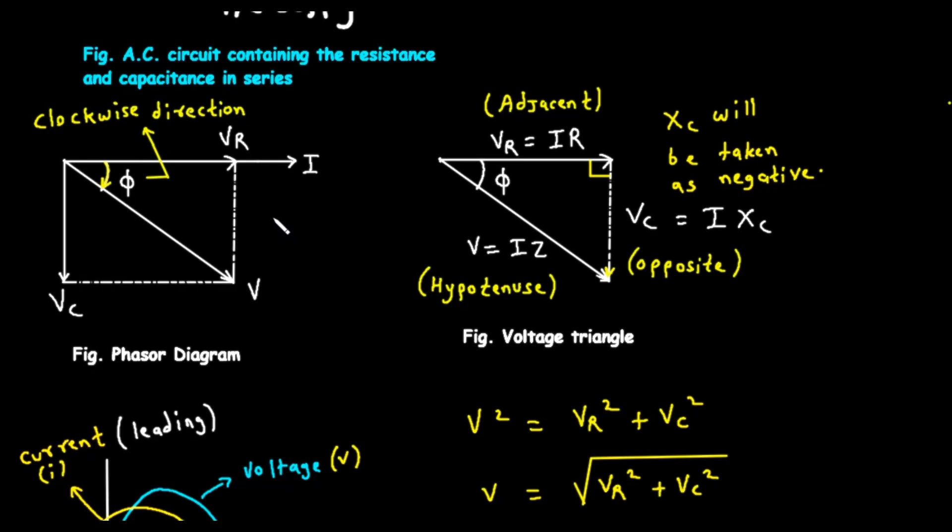Now, let's add the voltage phasors. The voltage across the resistor VR is in phase with the current. So we draw its phasor VR right on top of the current phasor, also pointing to the right. Next is the voltage across the capacitor VC. We know that the capacitor's voltage lags the current by 90 degrees. On a phasor diagram, a 90-degree lag is represented by pointing straight down. So we draw the VC phasor as an arrow pointing vertically downwards from the same starting point.